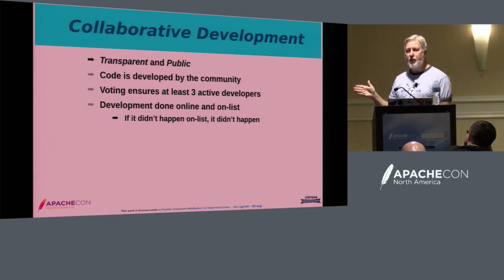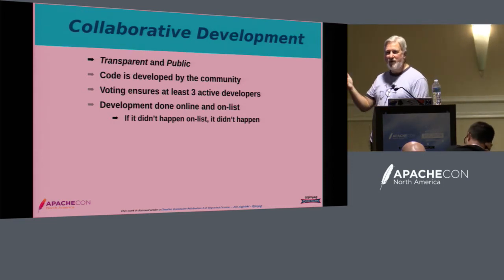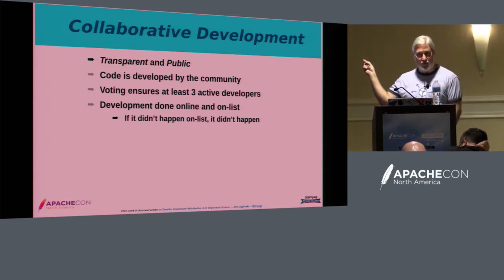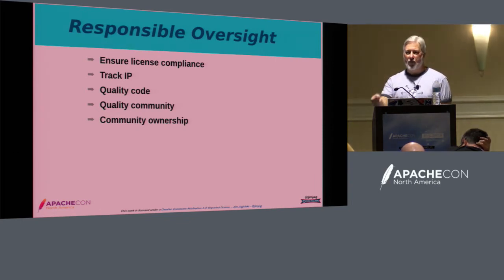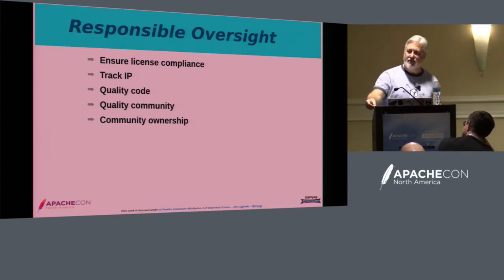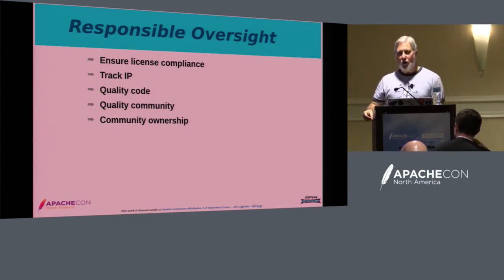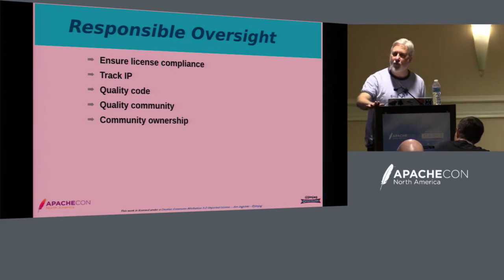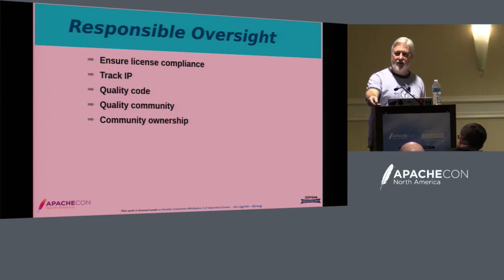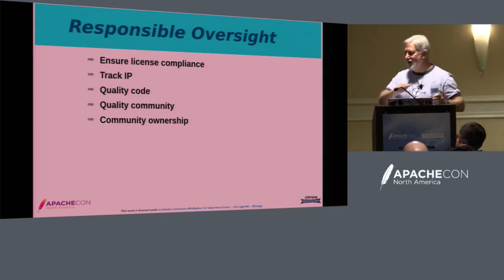Collaborative development is also very important. Everything the ASF does is open and transparent on mailing lists, and we'll see how this really ties into InnerSource as well. Responsible oversight means that everyone feels personally responsible for the software. I may have contributed a patch, but if it goes wrong, the entire community, the entire project, feels just as empowered to change it, improve it, veto it — everyone is responsible.